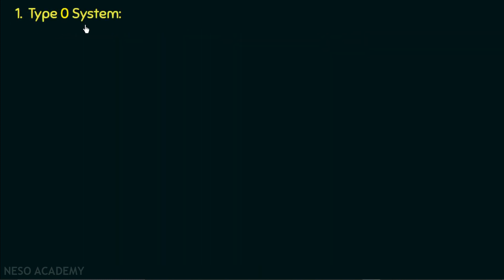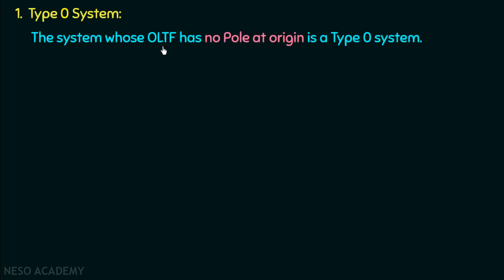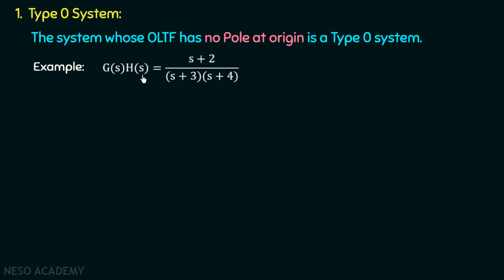The first one is the type zero system. The system whose open loop transfer function has no pole at origin is a type zero system. For example, if G(s)H(s) = (s+2) / [(s+3)(s+4)], then it is a type zero system because it has no pole at the origin. One pole is at s = -3 and the other is at s = -4, but no pole is at s = 0.